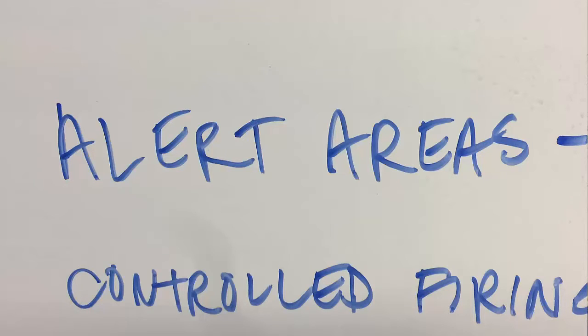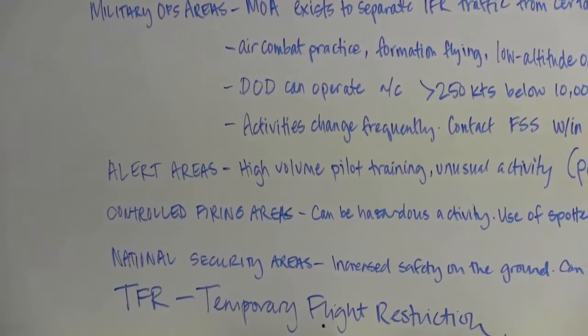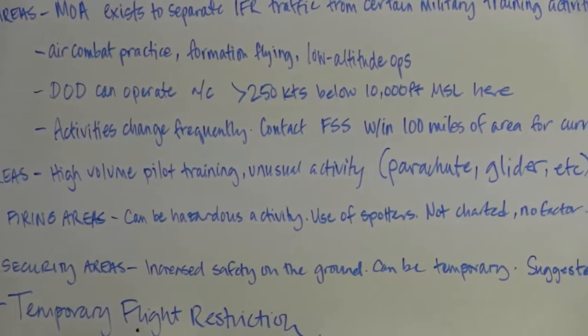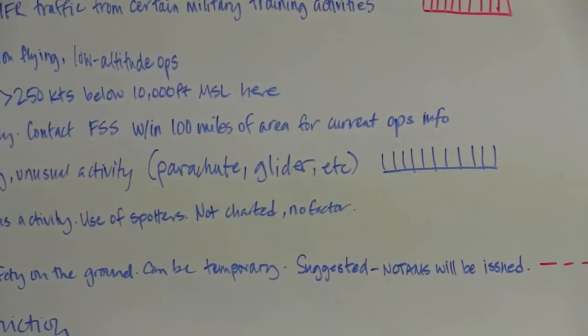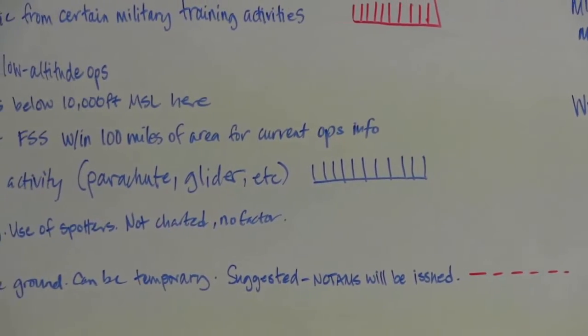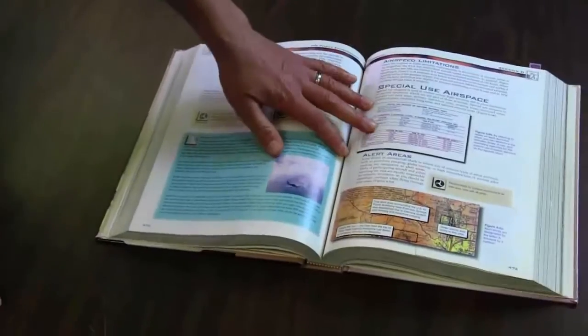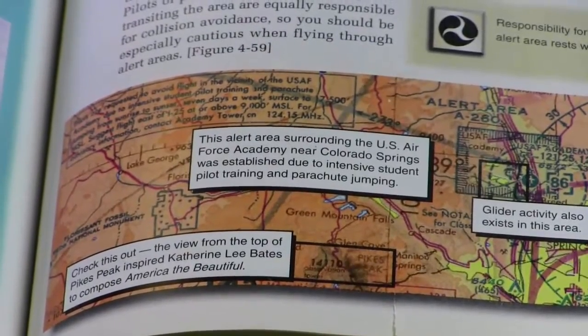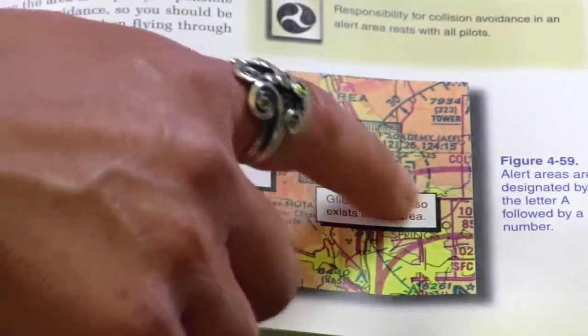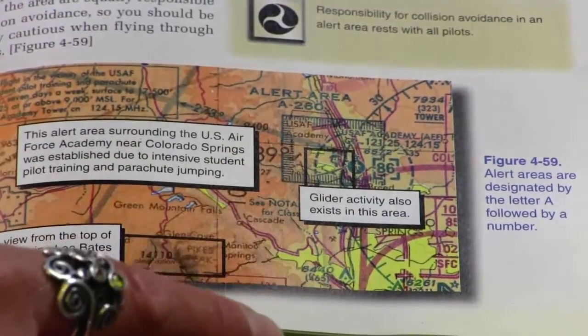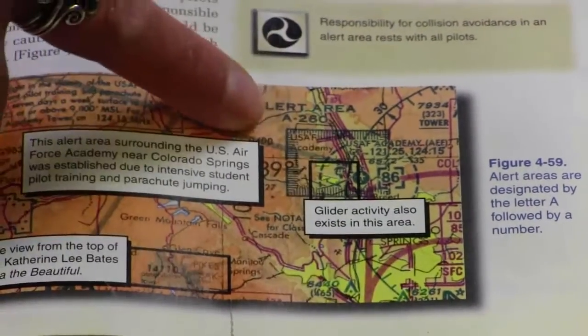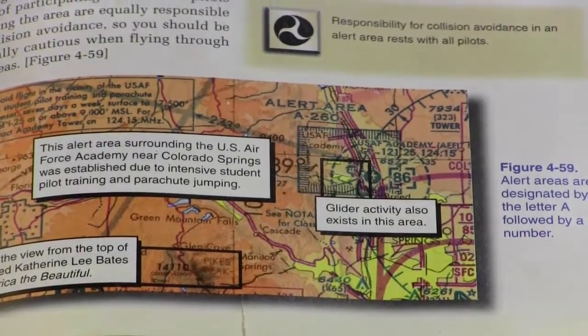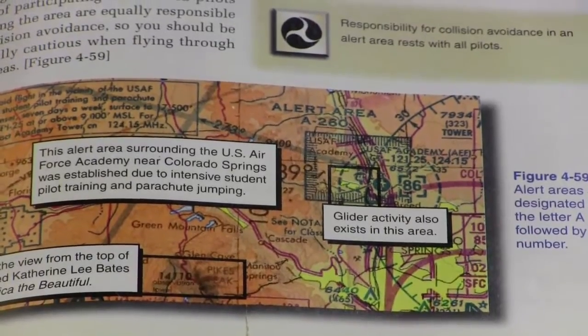Alert areas are areas that have a high volume of pilot training or unusual activities such as parachute operations and gliders. These will be depicted on the sectional, and if there's a really high rate of training it will be surrounded by the blue crosshatched line. Here's an example in the textbook of an alert area surrounding the U.S. Air Force Academy near Colorado Springs — there's intensive student pilot training, parachute jumping, and glider activity. They're designated by 'alert area' and a number with a letter, which you can look up in the sectional legend.